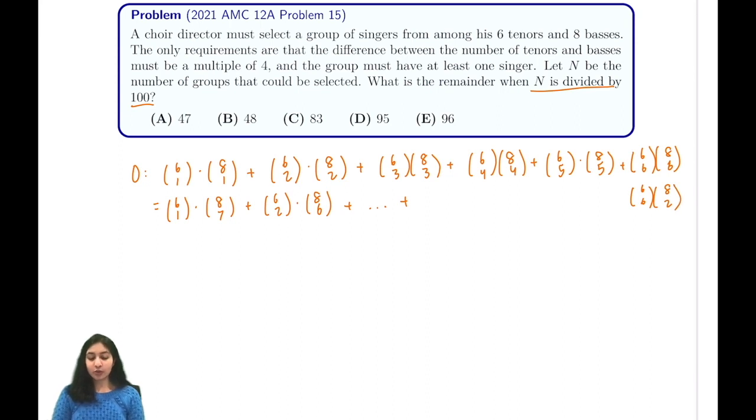From here, you'll notice that this is just an application of Vandermonde's identity, which tells us that this long expression is actually just equal to 14 choose 8. But we have to remember that we excluded the 6 choose 0 times 8 choose 8 case that we begin with, so we have to subtract that off. And this is actually just going to be 1, so we have 14 choose 8 minus 1 in this case.